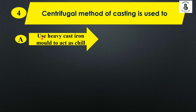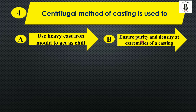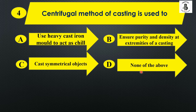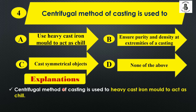The centrifugal method of casting is used to: Option A: use heavy cast iron mold to act as a chill, Option B: ensure purity and density at extremities of a casting, Option C: cast symmetrical objects, and Option D: none of the above. The centrifugal method of casting is generally used to act as a chill. So the right answer is Option A.